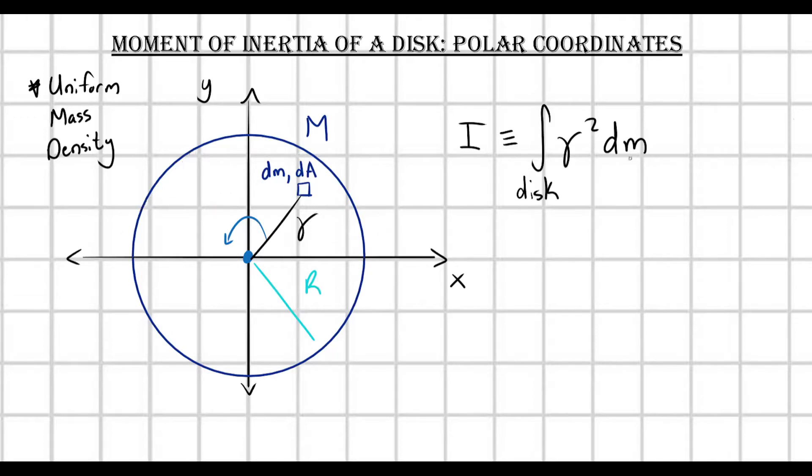Right now, with it in this form with dm here, I can't do that. I need to convert this into a 2D integral. And the way that I can do that, is I can very simply just invoke the definition of mass density. So, sigma, which is an area mass density, that's what this symbol represents.